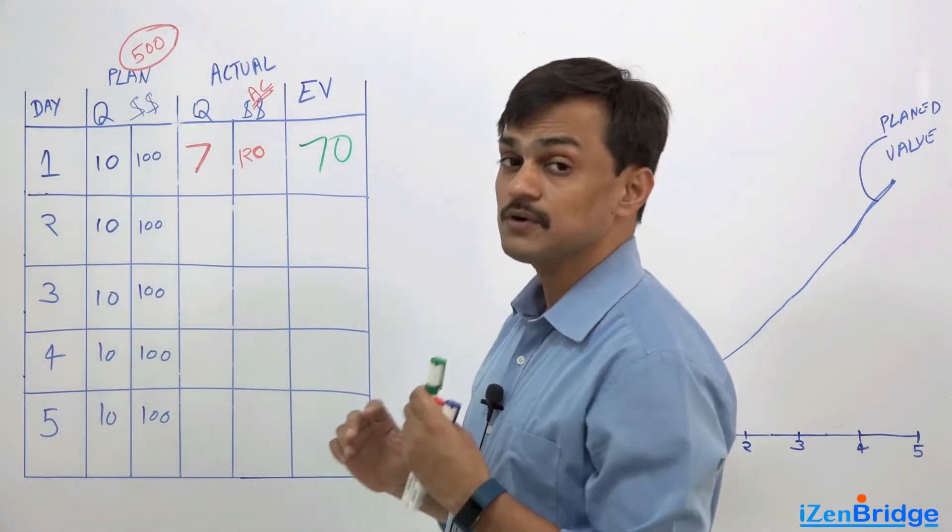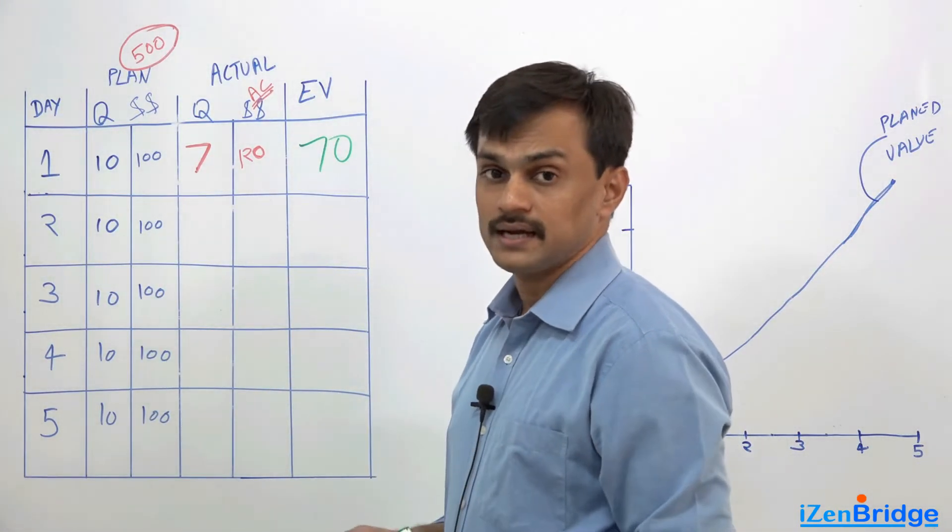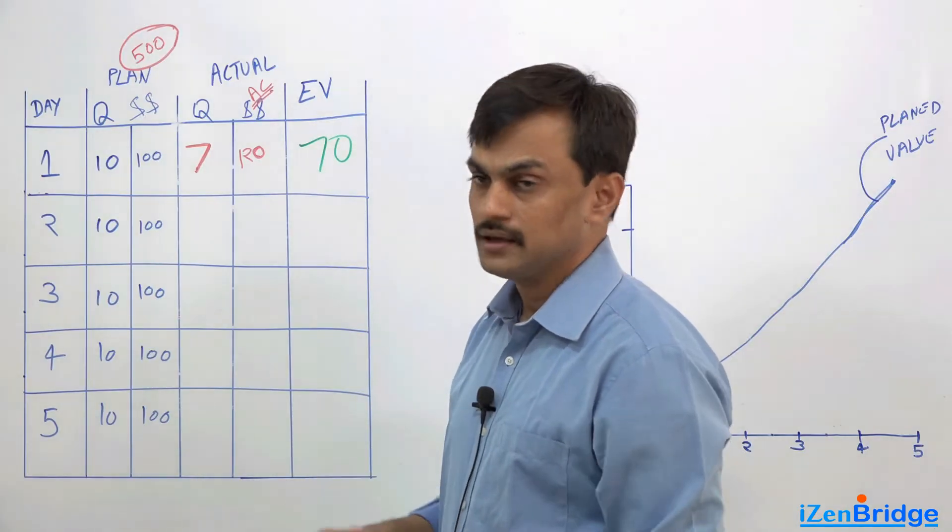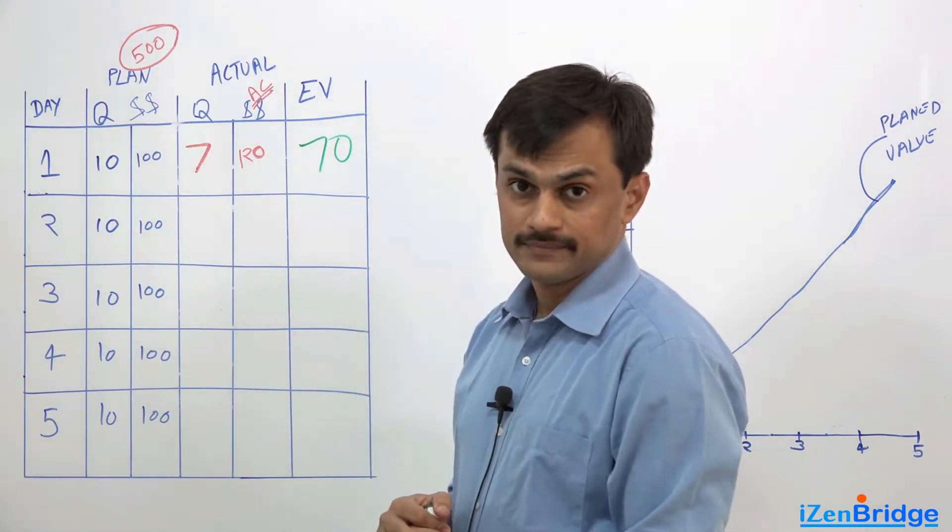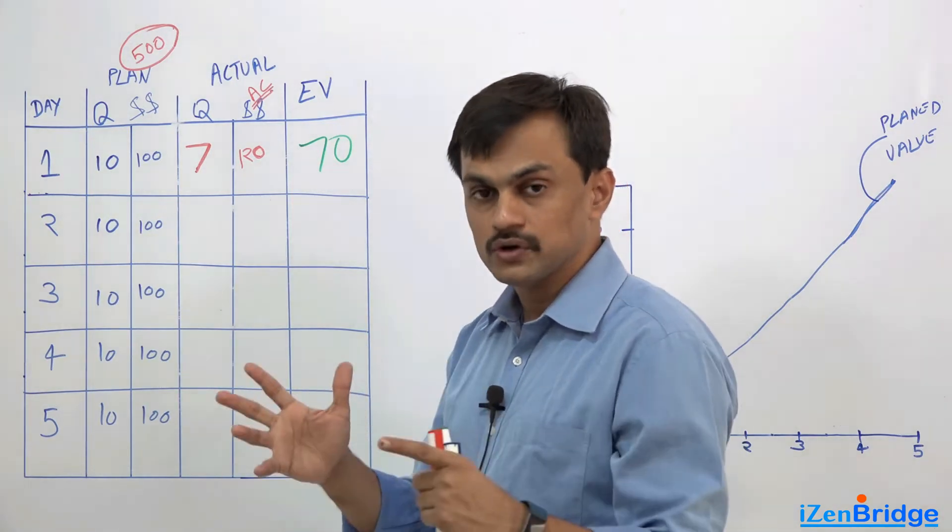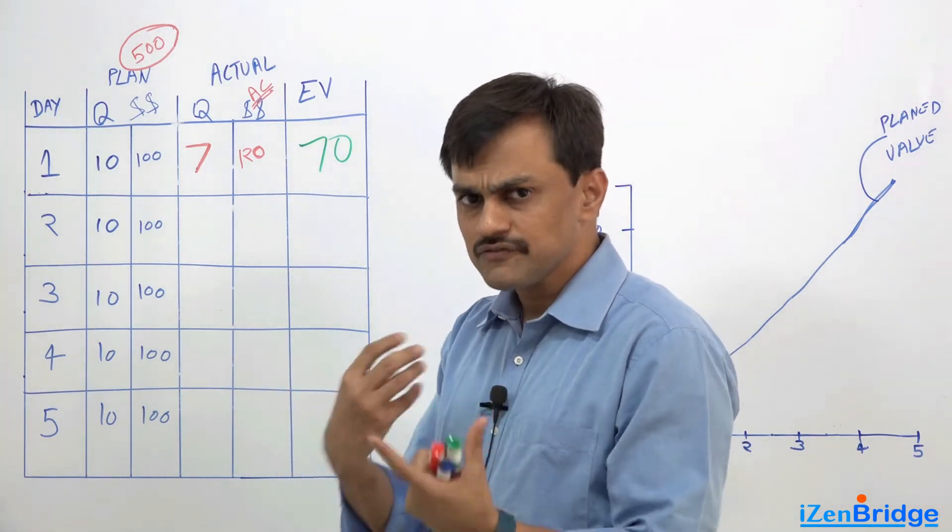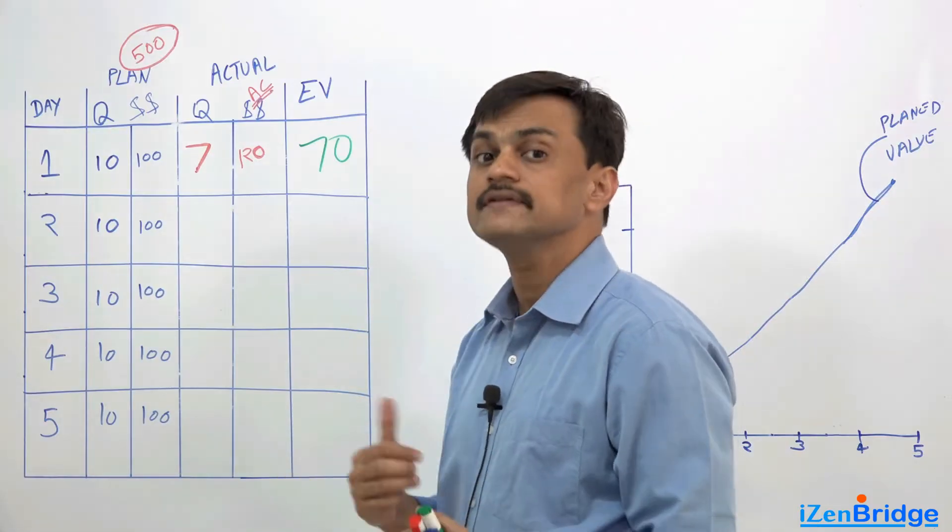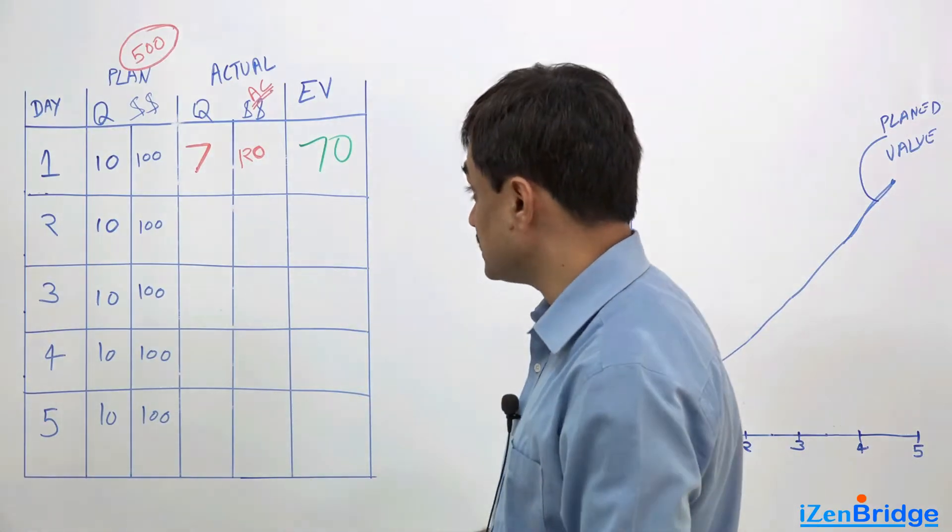Now, we can calculate some of the variances to understand how we are performing looking at this particular data. Just looking at earned value, planned value, or actual cost is a first level calculation. The second level calculation can be done by calculating some variances.